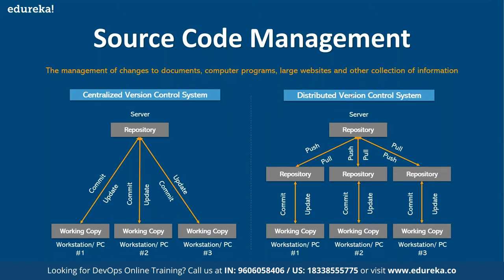Another drawback was that if the remote server went down, you lose your data. To address these issues, distributed version control systems emerged — Git, GitHub, GitLab, Bitbucket are typical examples. In distributed VCS, we have a three-layer architecture: working directory, local repo, and remote repo. Developers cannot commit code directly from working directory to remote repo — there's an intermediate local repo layer. The local repo is present on the same server as your working directory.